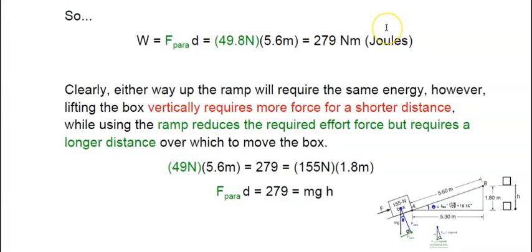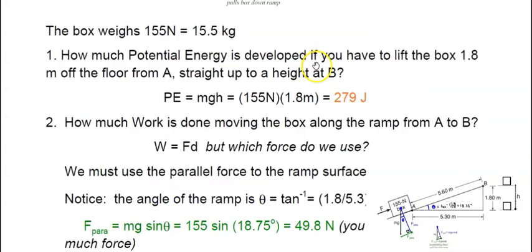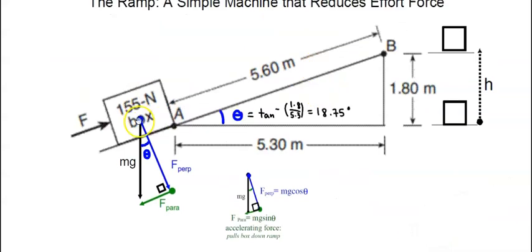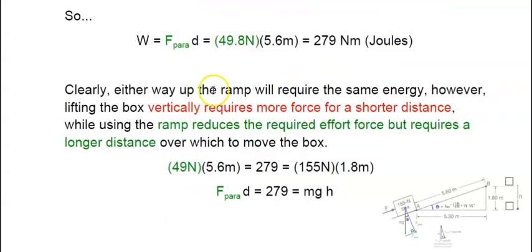So we know that it takes 279 joules to lift this box straight up from the floor to the height of point B. Well, if we were to take the parallel force of 49.8 Newtons and push it along the diagonal from A to B, you would see that the parallel force, which is this applied force in opposite direction, times this distance will still equal 279 Newton meters or joules.